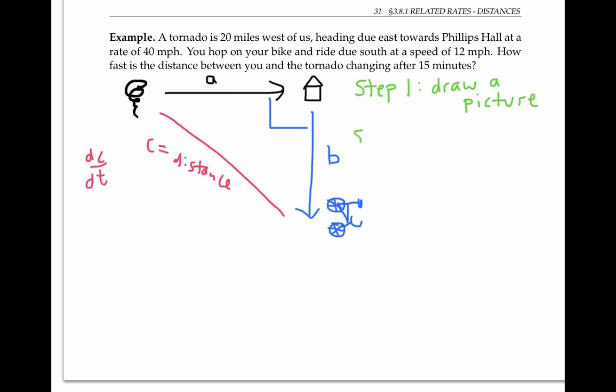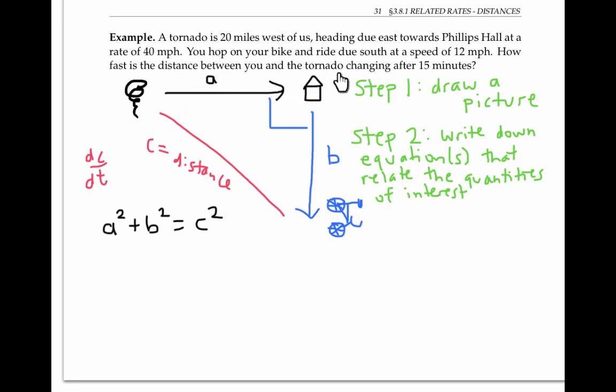The next step is to write down equations that relate the quantities of interest. In this problem, we know by the Pythagorean theorem that a squared plus b squared equals c squared. We're interested in how fast the distance between you and the tornado is changing. That's a rate of change. And the rate at which the bicycle is traveling and the tornado is moving, these are also rates of change. In order to work these rates of change into the problem, I'm going to take the derivative of both sides of this equation with respect to time.